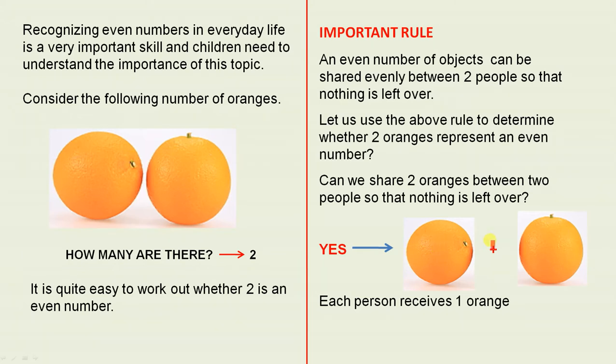Here's one orange and here's another orange. So one person gets one orange. The other person gets another orange. So each person receives one orange and there is nothing left over. So that tells us that two is an even number.